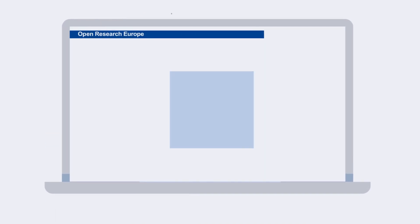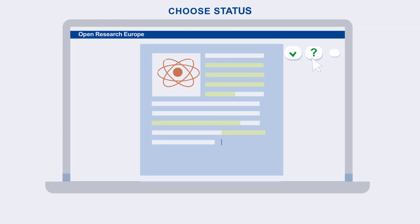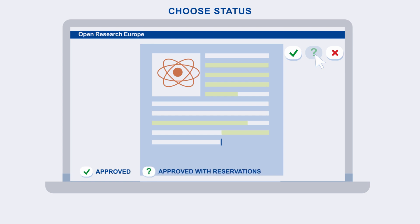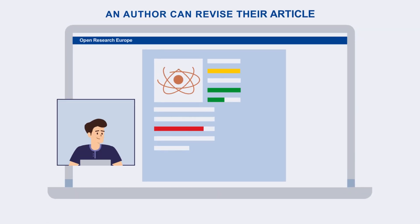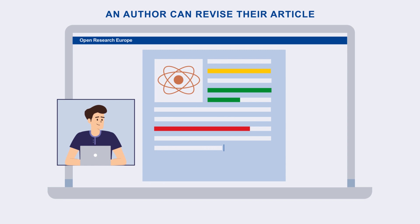Then, they must choose a status for their report, from approved, approved with reservations, or not approved. An author can revise their article to address the reviewer's comments, and reviewers can provide additional reports on the new version.